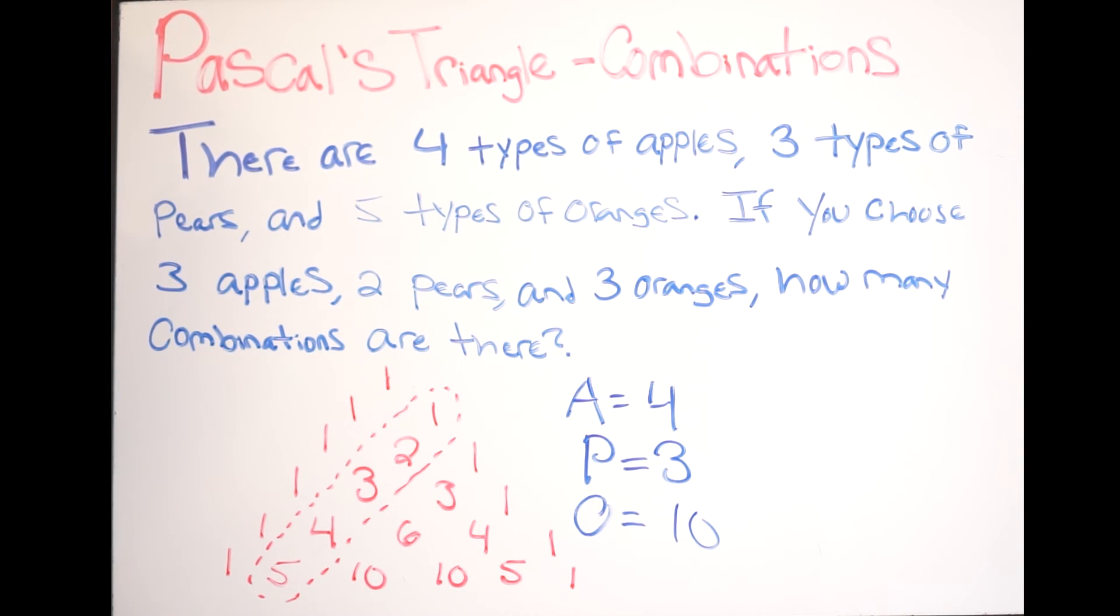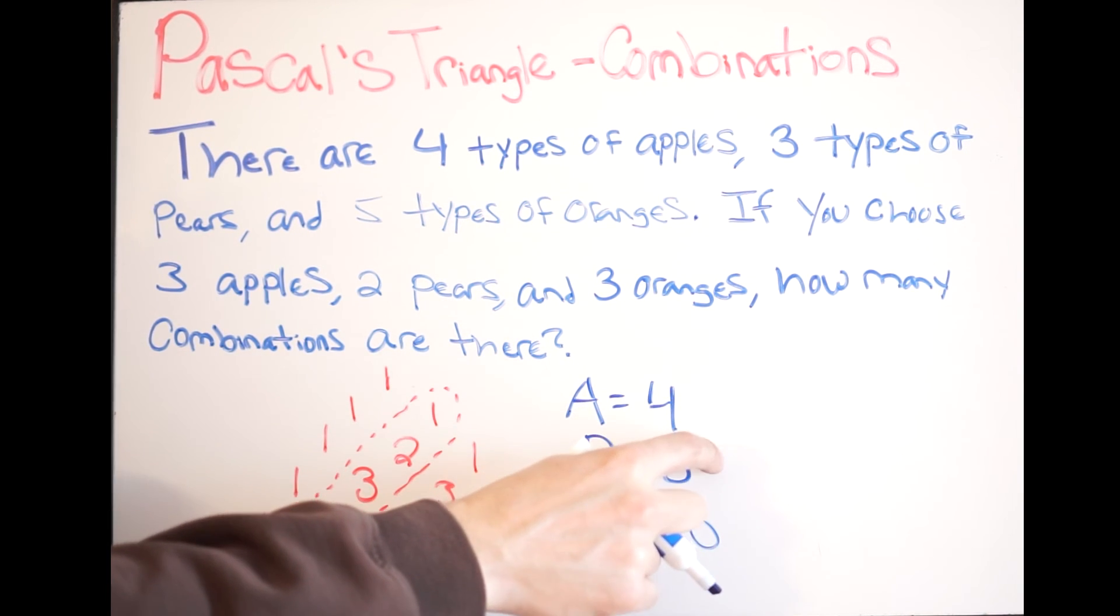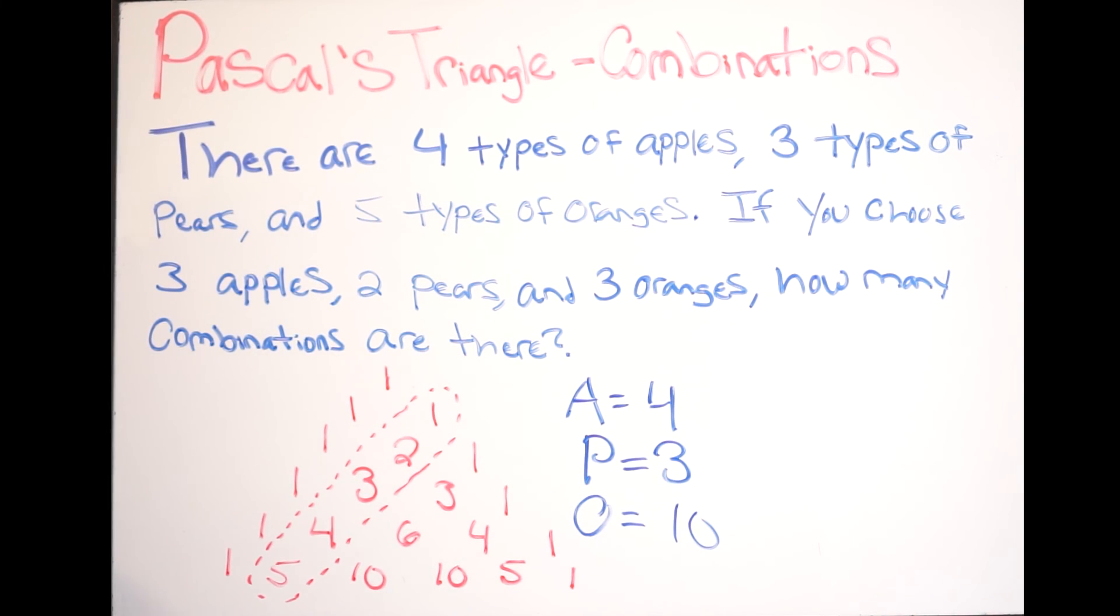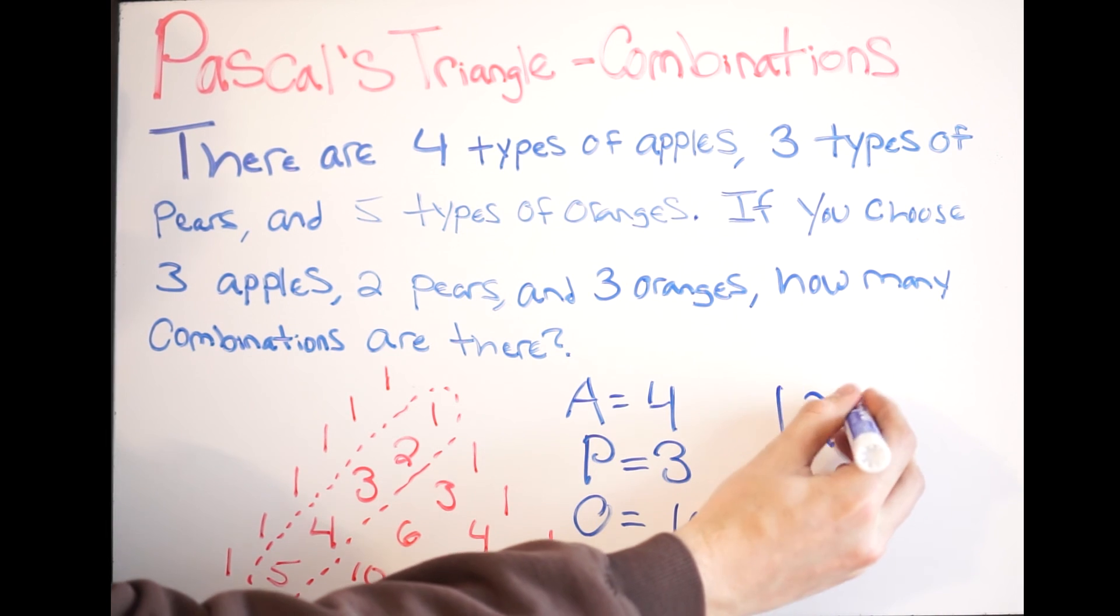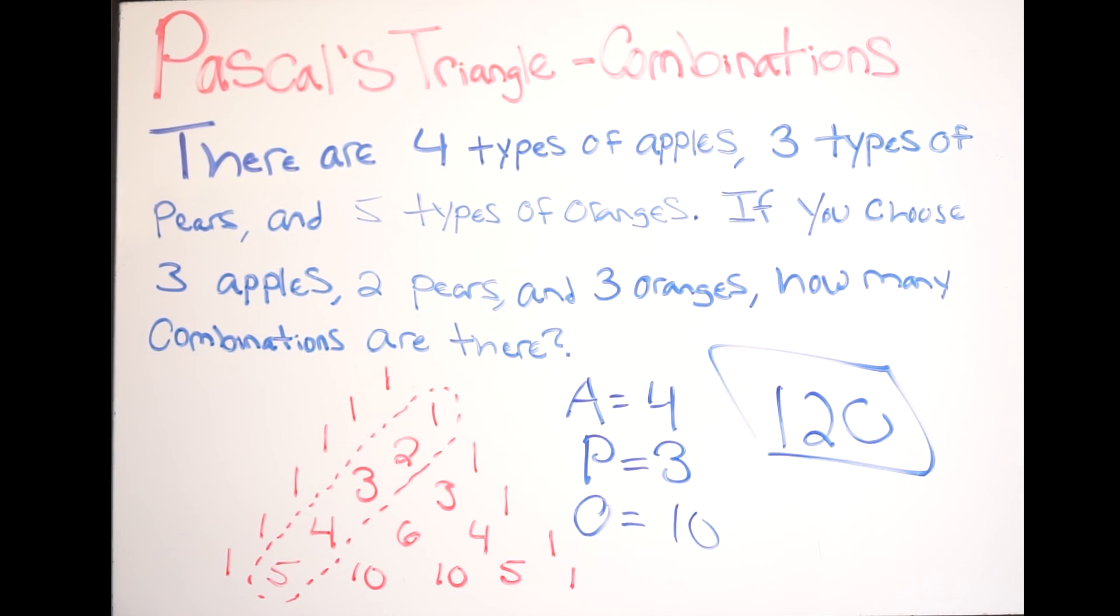Okay, now you aren't done yet. We want to figure out the total number of combinations. So all you have to do at this point is simply multiply your values. So we're doing 4 × 3 × 10, right? So we know that 4 × 3 is 12, × 10 is going to give us 120. This is our final answer.